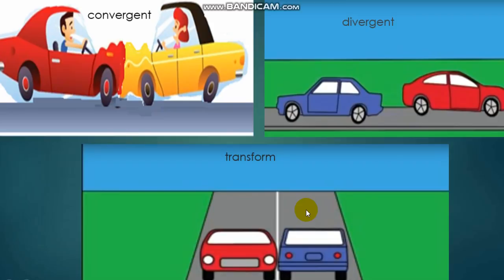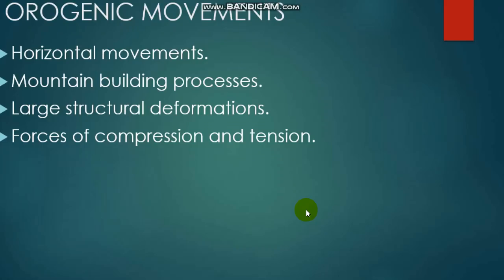Remember the epigenic movements which we discussed in the previous video? The epigenic movements were basically the vertical movements upwards and downwards. The orogenic movements, on the other hand, are the horizontal movements which act on the earth side to side. They are also known as mountain building movements.